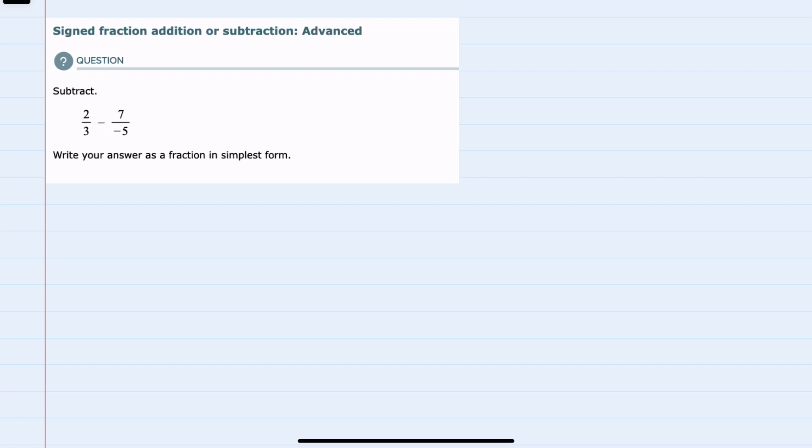We're asked to subtract these two fractions, and we notice there is a negative 5 in the denominator. Since we're going to ultimately want to get a common denominator, I should recall that the negative in a fraction can be written out in front, in the numerator, or the denominator. Since we'll be working to get a common denominator in my first step, I'm just going to move that negative into the numerator, and that will allow me to then look at the 3 and the 5 in the denominators to get a common denominator.